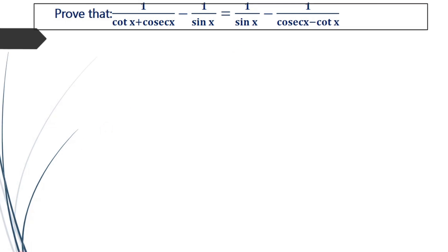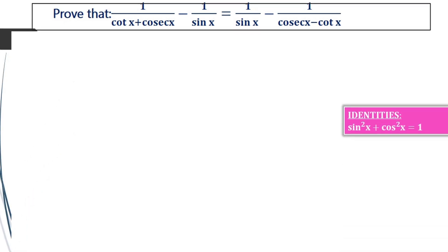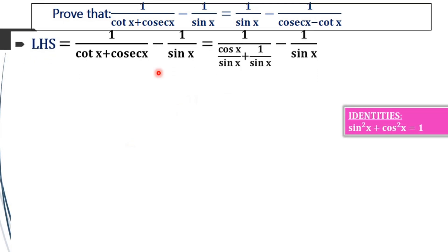For proving this, we are using the method where we will simplify the LHS separately and then the RHS separately, and we will check whether these two simplified forms are equal. For that, first take 1 divided by cotx plus cosecx minus 1 by sinx.